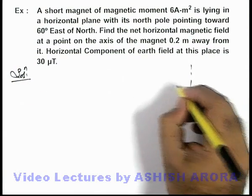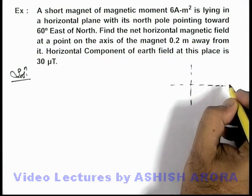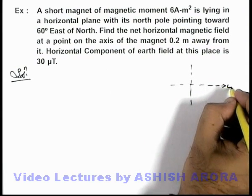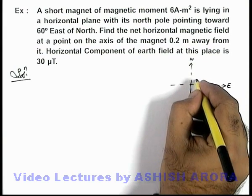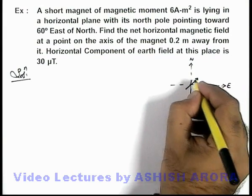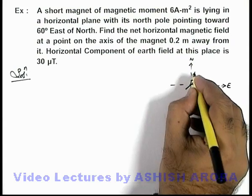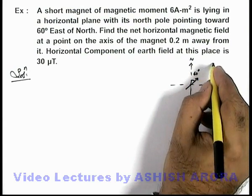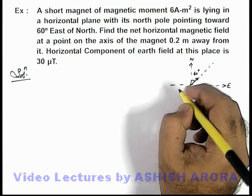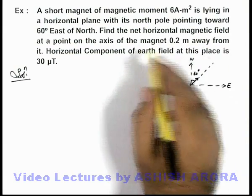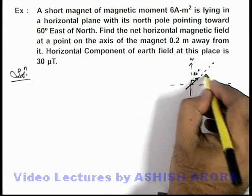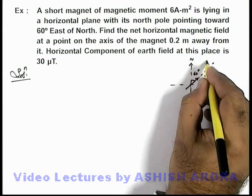We just draw the directions at the location where the magnet is placed. Say this is east, west, north and south. So here the magnet is placed at an angle 60° east from north, and in this direction we are required to find the net horizontal field at a point at a distance of 0.2 meters away from it. Say if this is the point P.